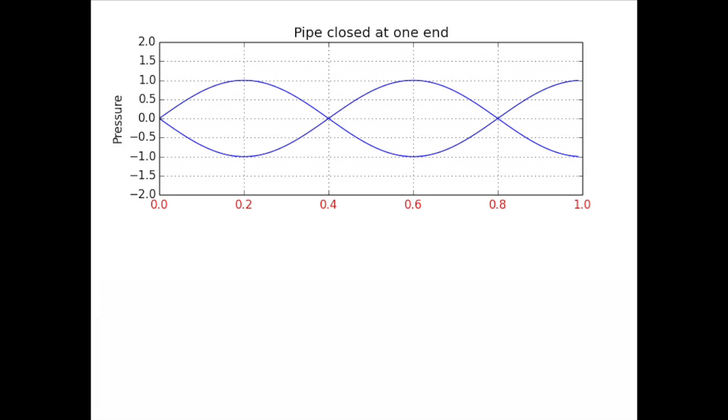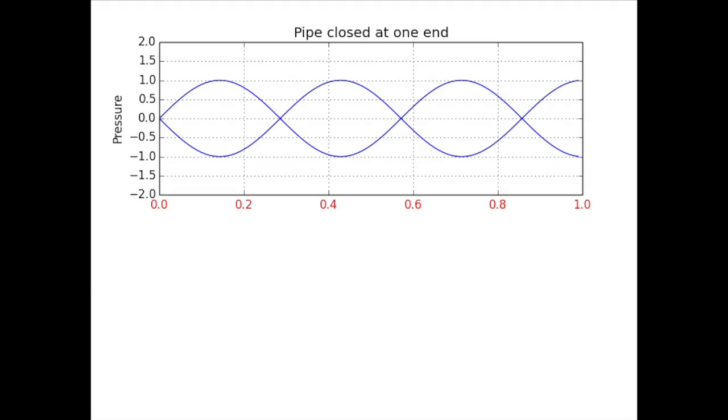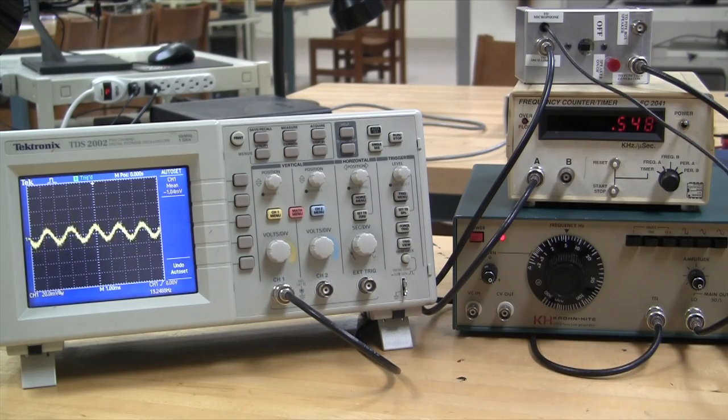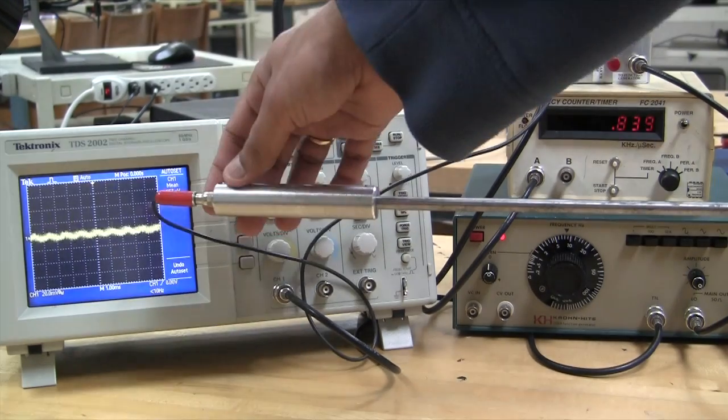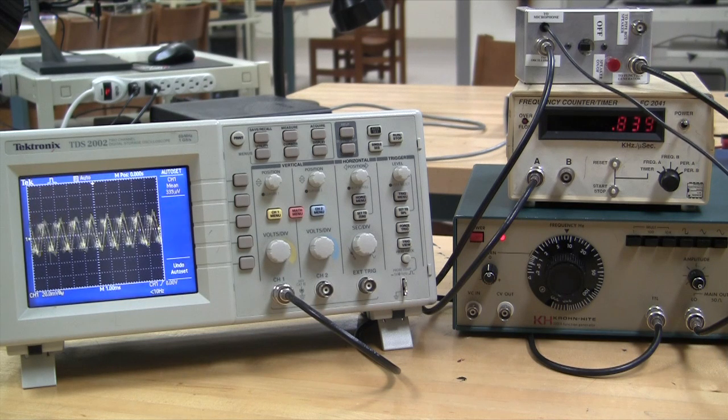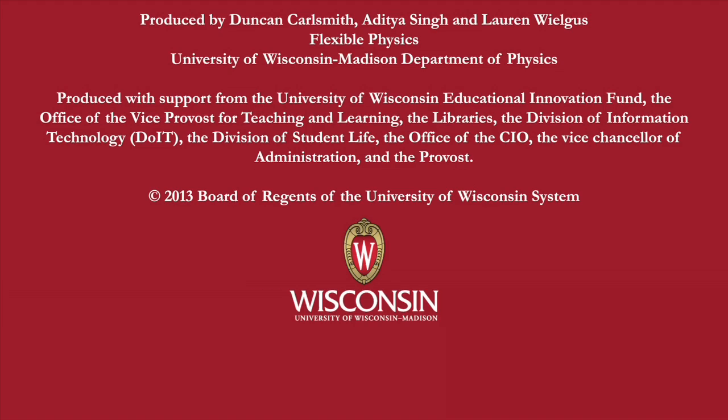All the overtone frequencies are still integer multiples of the fundamental, but they are ordered as 3 times, 5 times, 7 times and so on. Take the pipe you started out with and close it at the end that is away from the speaker. Place the microphone inside the pipe near the closed end and measure the fundamental and the first 3 overtones.